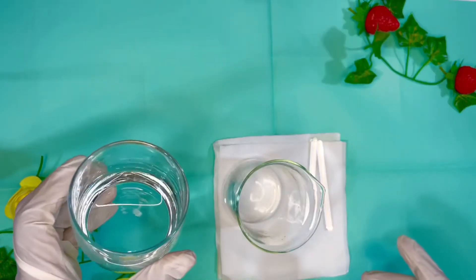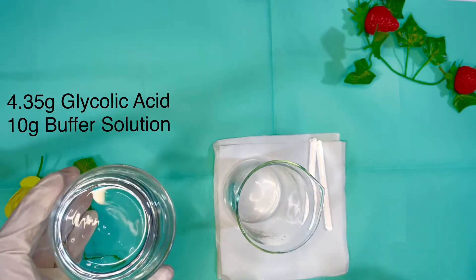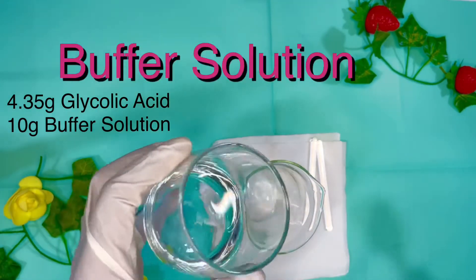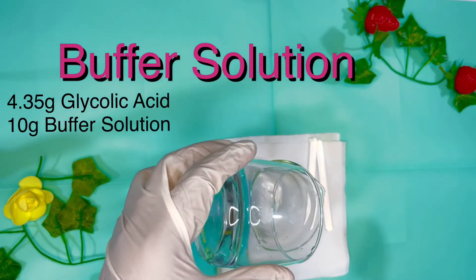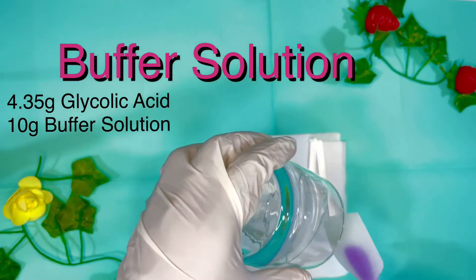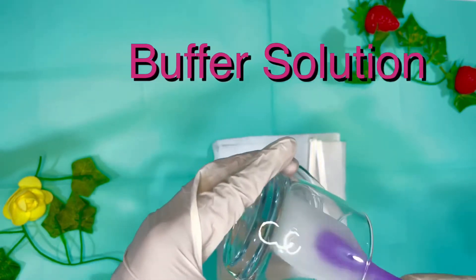We're gonna start with our Phase A, which is 4.35% of our glycolic acid and then 10% of our buffer solution. So we're gonna add our buffer solution. We're gonna add our glycolic acid into our buffer solution and then give it a good stir.